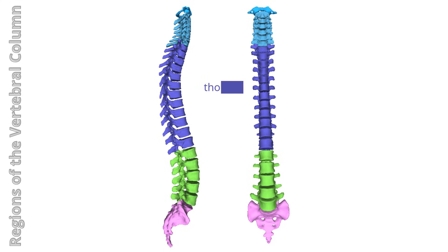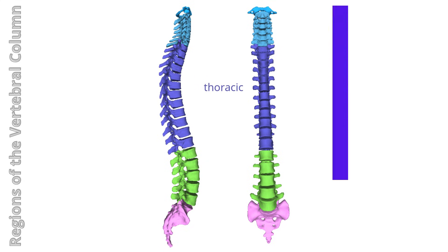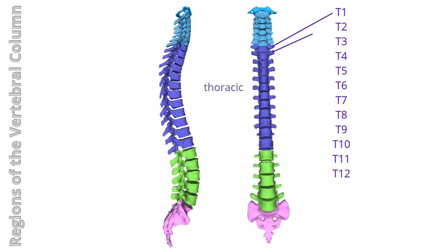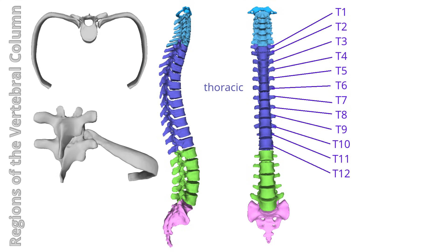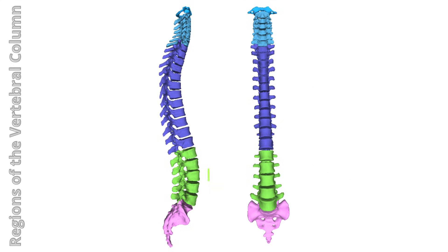Thoracic region: the longest segment, with 12 vertebrae, articulating superiorly with the 7th cervical vertebra and inferiorly with the first lumbar vertebra. Each thoracic vertebra articulates with the ribs of the thoracic wall.